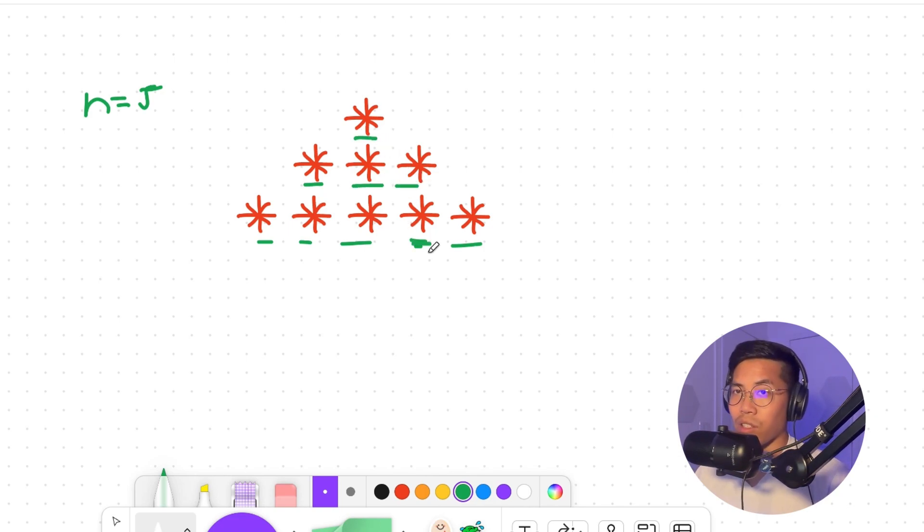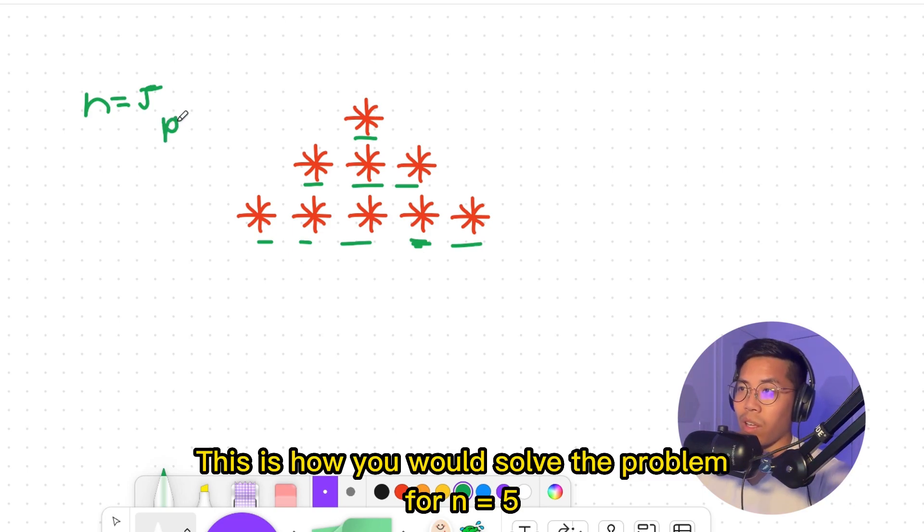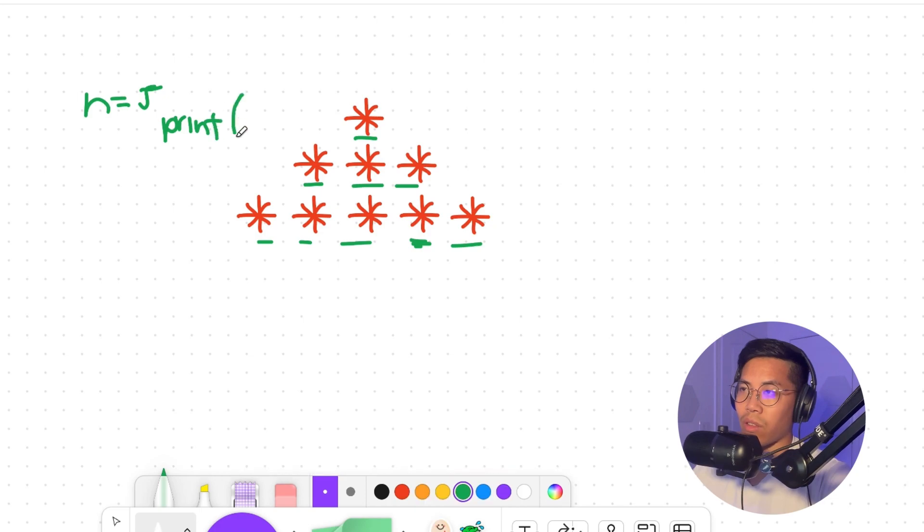So instead of thinking of this as stars, we should think of it as a string that we have to output. Basically, we have to call print on the first row, where here we have the quotation marks and quotation marks, and then we close out the parentheses. And here we have two spaces we have to print out and two spaces at the end. And then next, we have to print again. And this is the string. So one space here, one space here, and the string.